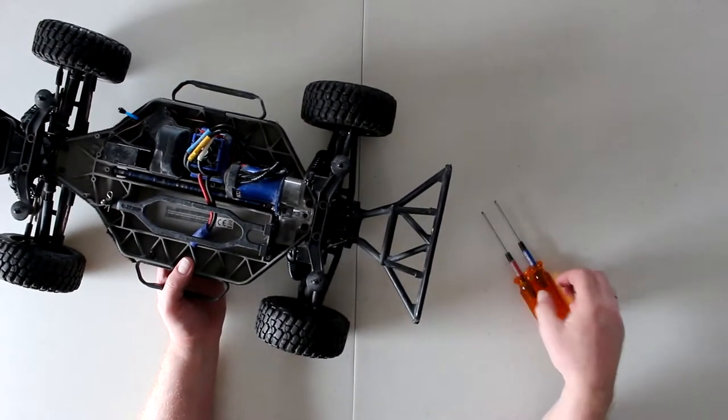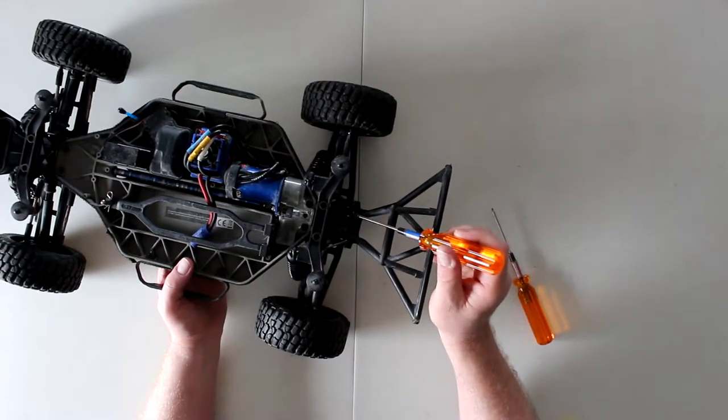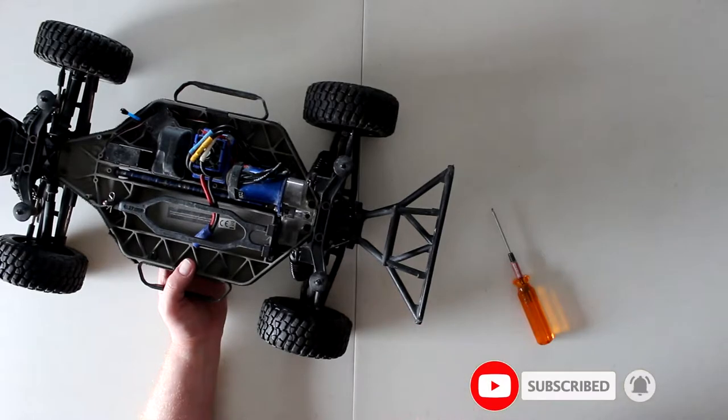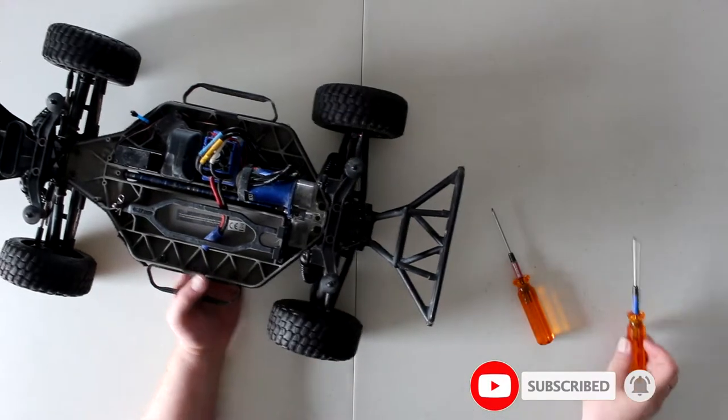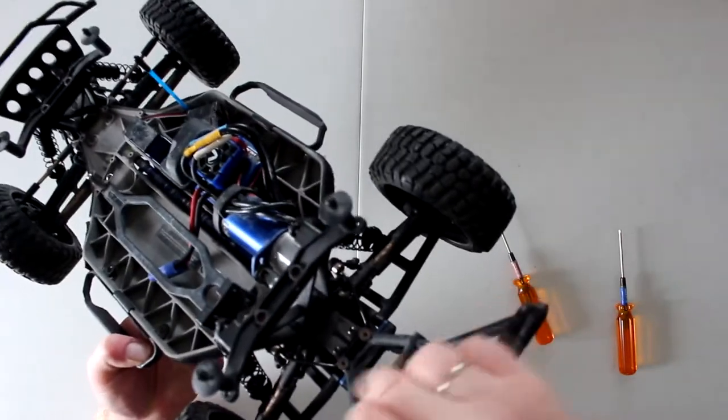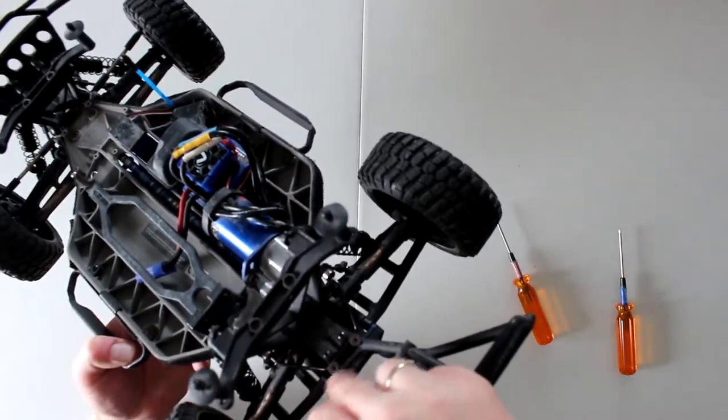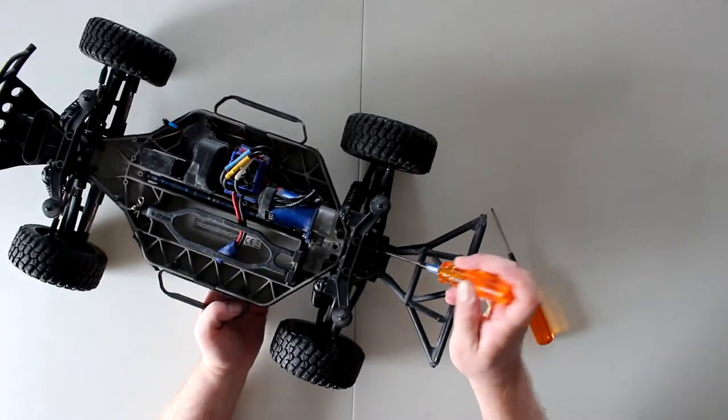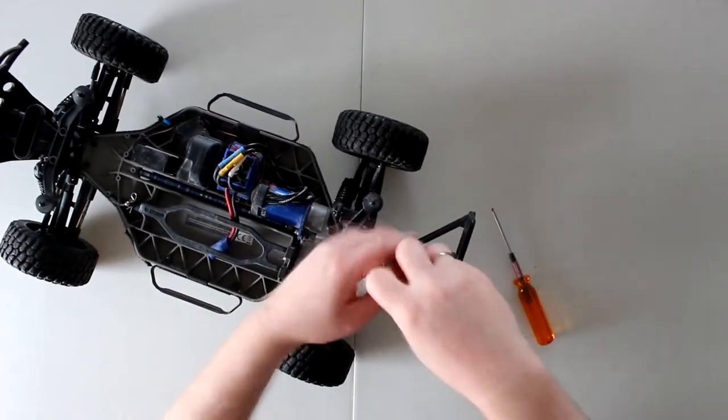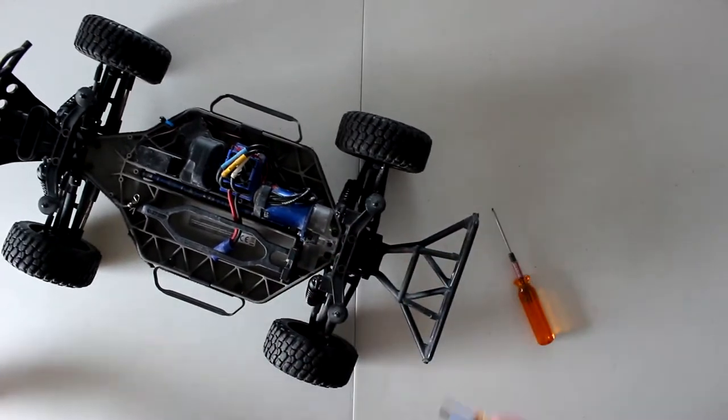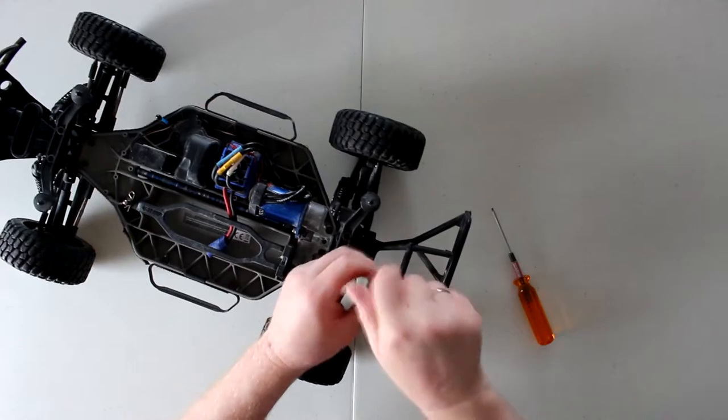One of the first things we'll need to do is remove these two screws here if you have the sway bar kit on yours. I don't have enough lighting to show you, but these are the two screws right here. These are 2.5mm.